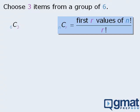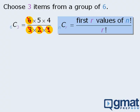Let's try two more. To evaluate six choose three, the numerator will be the first three values of six factorial and the denominator will be three factorial. The denominator evaluates to six, and we have a six in the numerator, so we can cancel these out, leaving us with five times four, which equals twenty.